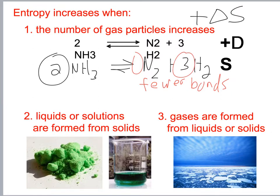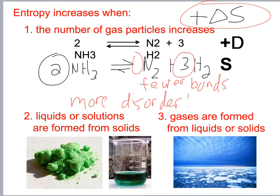Positive delta S means more disorder. When you go from two to four moles you get positive delta S. Also, liquids or solutions formed from solids increase entropy. Entropy increases when gases are formed from liquids or solids because they have more energy.